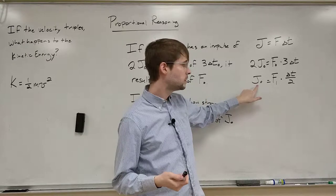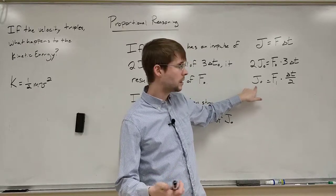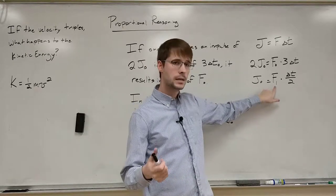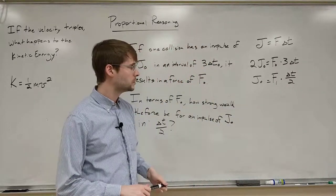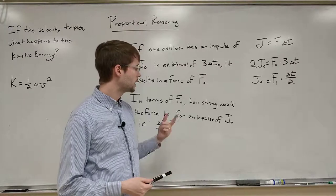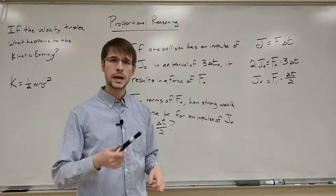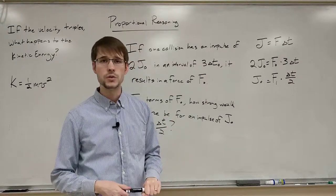That's going to be j0, just the original number for the impulse, f1 is the force we're looking for, and then this one is delta t over 2. And so when we go through this, we're going to actually do what we said before, and divide these two equations by each other, and use a ratio.